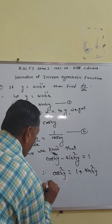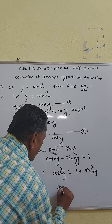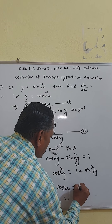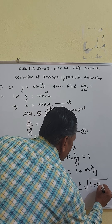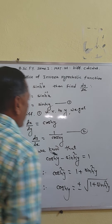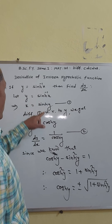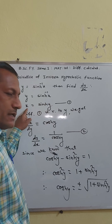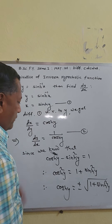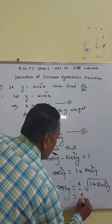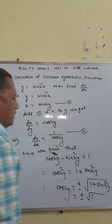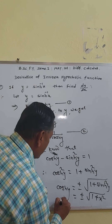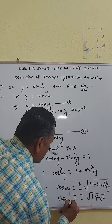We need cosh y. So from the identity, cosh²y equals 1 plus sinh²y. Taking the square root of both sides, we get cosh y equals the square root of (1 plus sinh²y). From equation 1, sinh y equals x, so cosh y equals the square root of (1 plus x²).